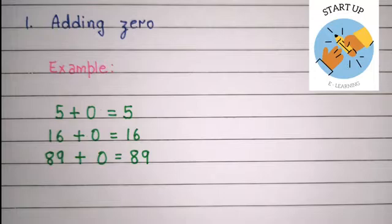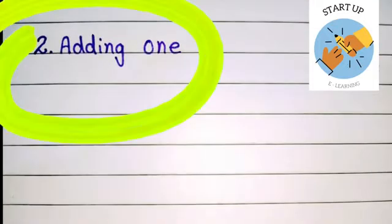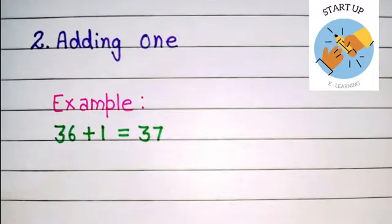Let's talk about the next addition fact, that is adding 1. Kids, when you add 1 to any number, the sum is the next number. See this example: 36 plus 1 is equal to 37.